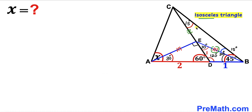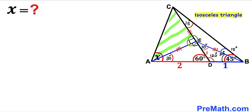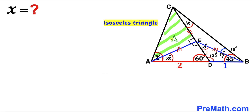In triangle AEC, we know leg AE equals side CE (since AE = EB = CE), and the angle at E is 90 degrees. Therefore triangle AEC is an isosceles right triangle. Since the two legs are equal, the two base angles must be congruent, so both angles work out to 45 degrees.